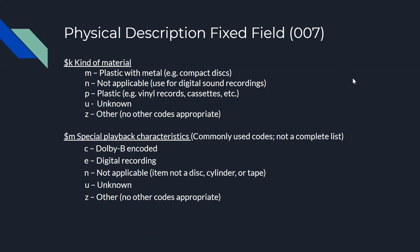Subfield K is the kind of material used in the manufacture of sound recordings, both instantaneous and mass produced. Options include plastic with metal, not-applicable, plastic, unknown, and other. Subfield M codes the playback characteristics for sound recordings, including special equipment or equalization necessary for proper playback, and should only be used if it's clearly indicated on the item — for example, Dolby or digital recording. If not clearly displayed, do not use this subfield.